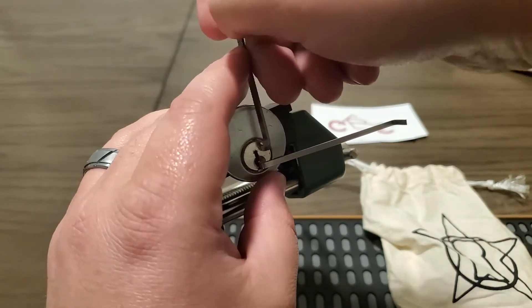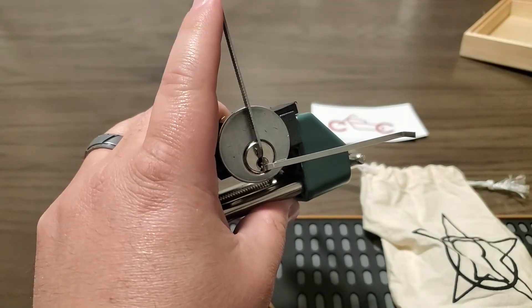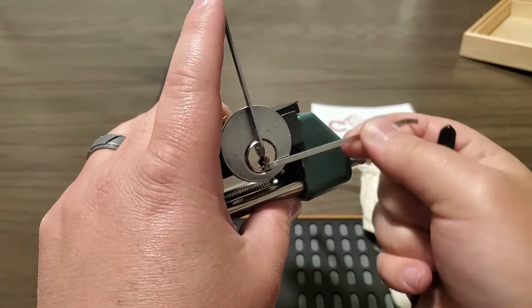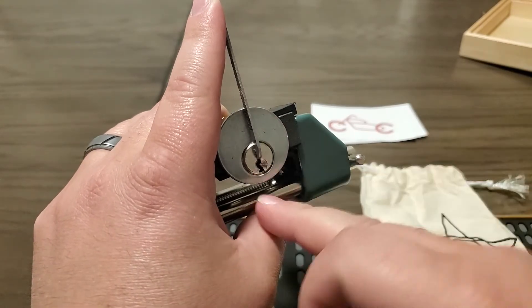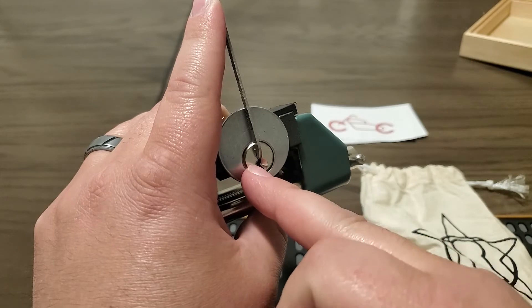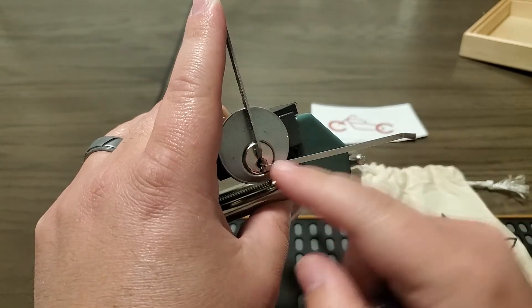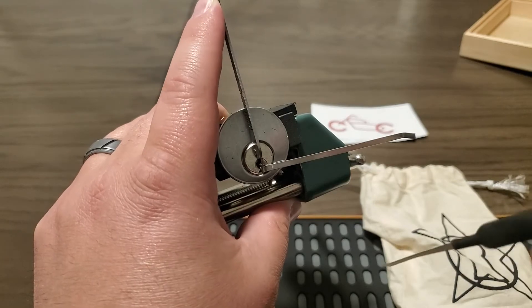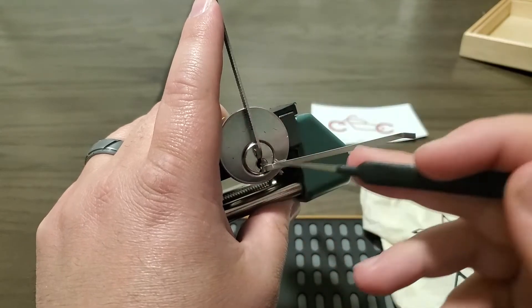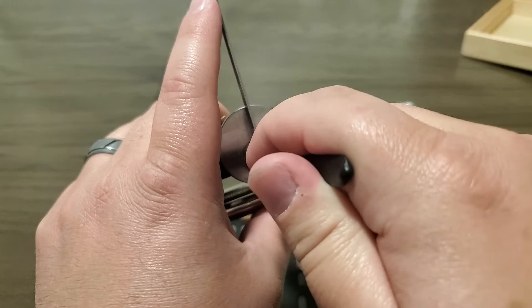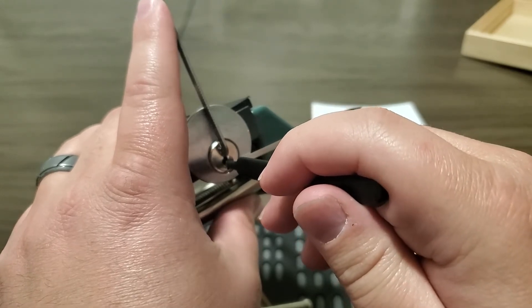This is a Schlage keyway. Personally, I'm curious if anybody else has found a better way to deal with this or is just better at controlling their picks, but I have a hard time with the pick falling down into this bottom groove and getting stuck down there, not being able to hit the pins. So I just take a tension tool and put it in there so that that doesn't happen, and then it's able to stay in this groove on the left. I've not picked very many Schlage keyways, so I'm still kind of getting used to the shape of them.